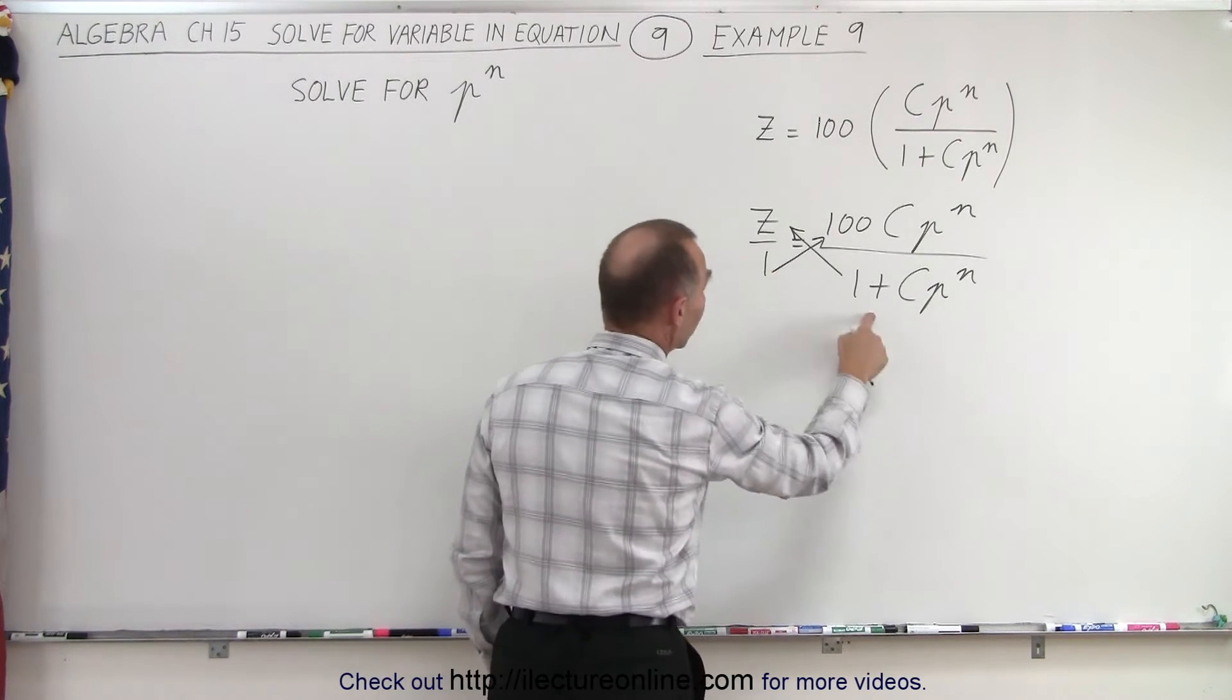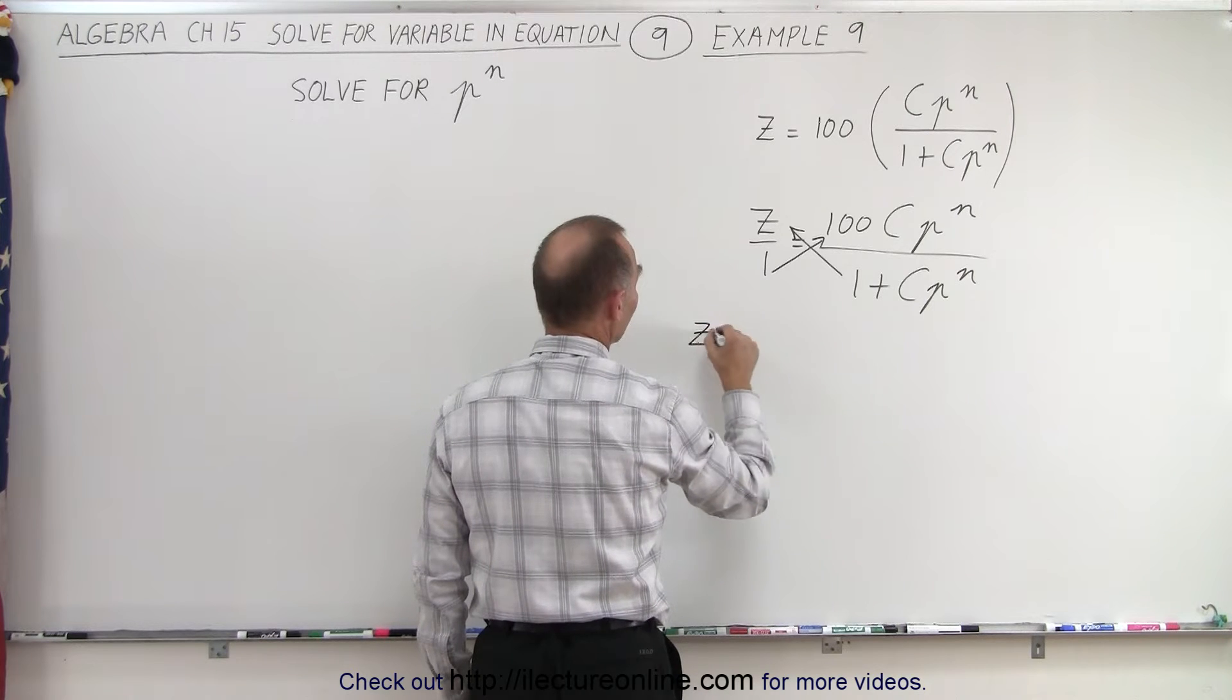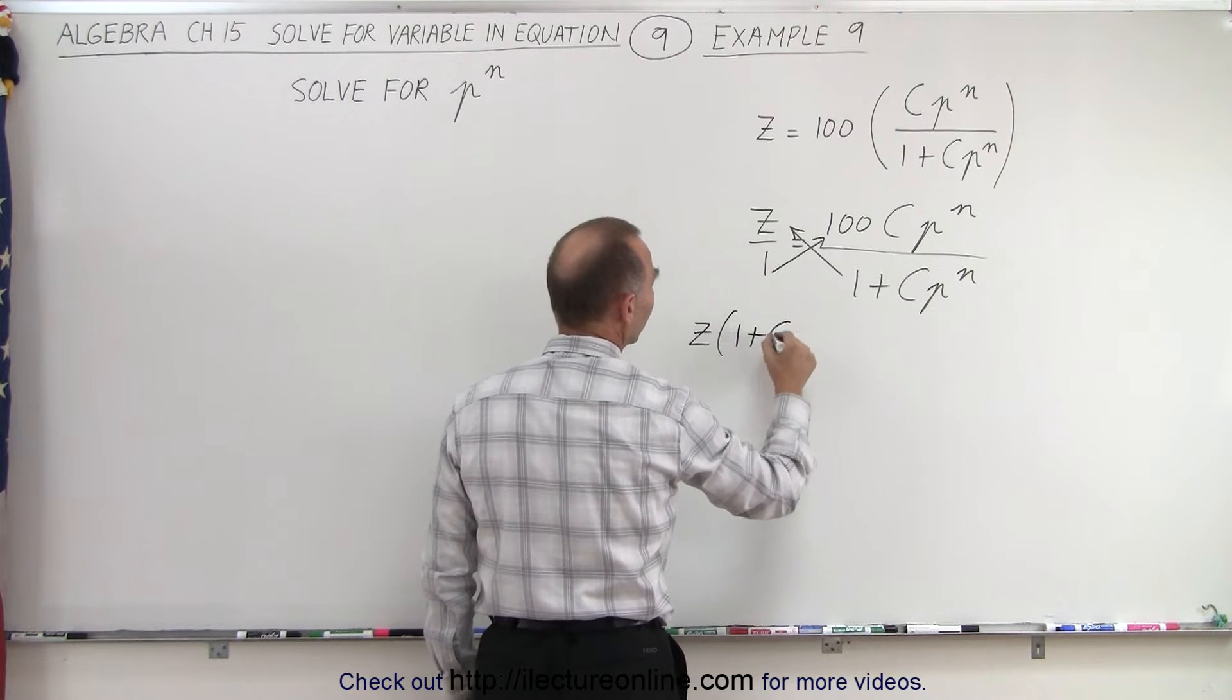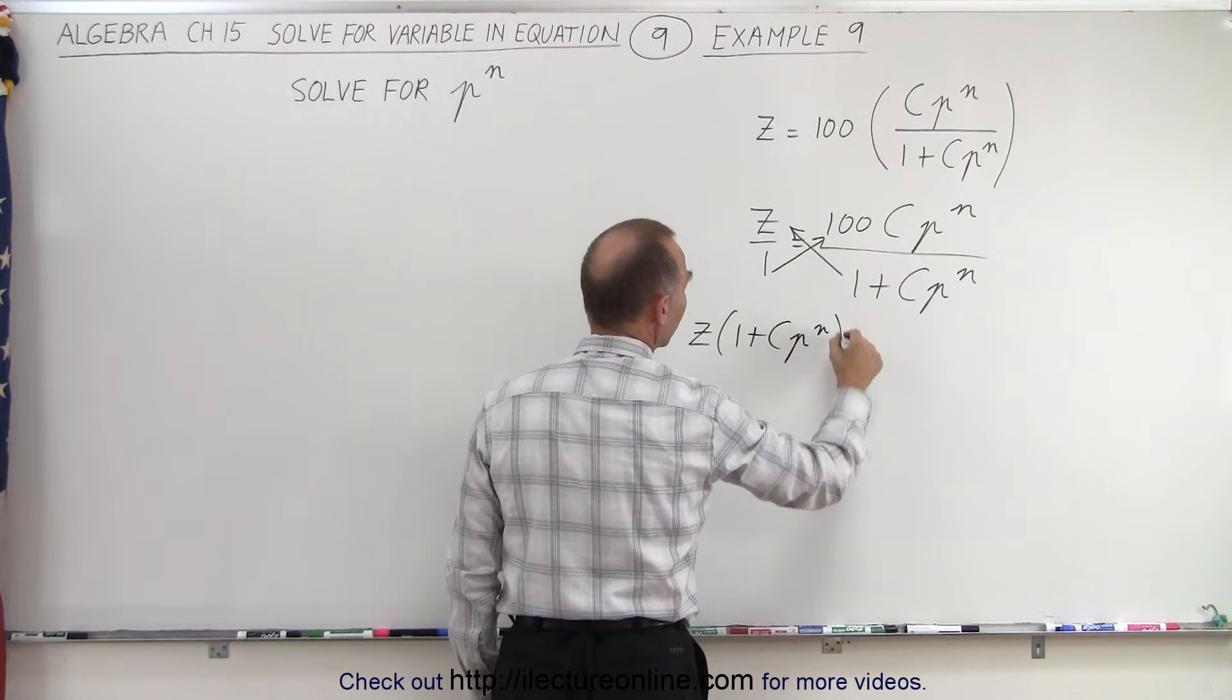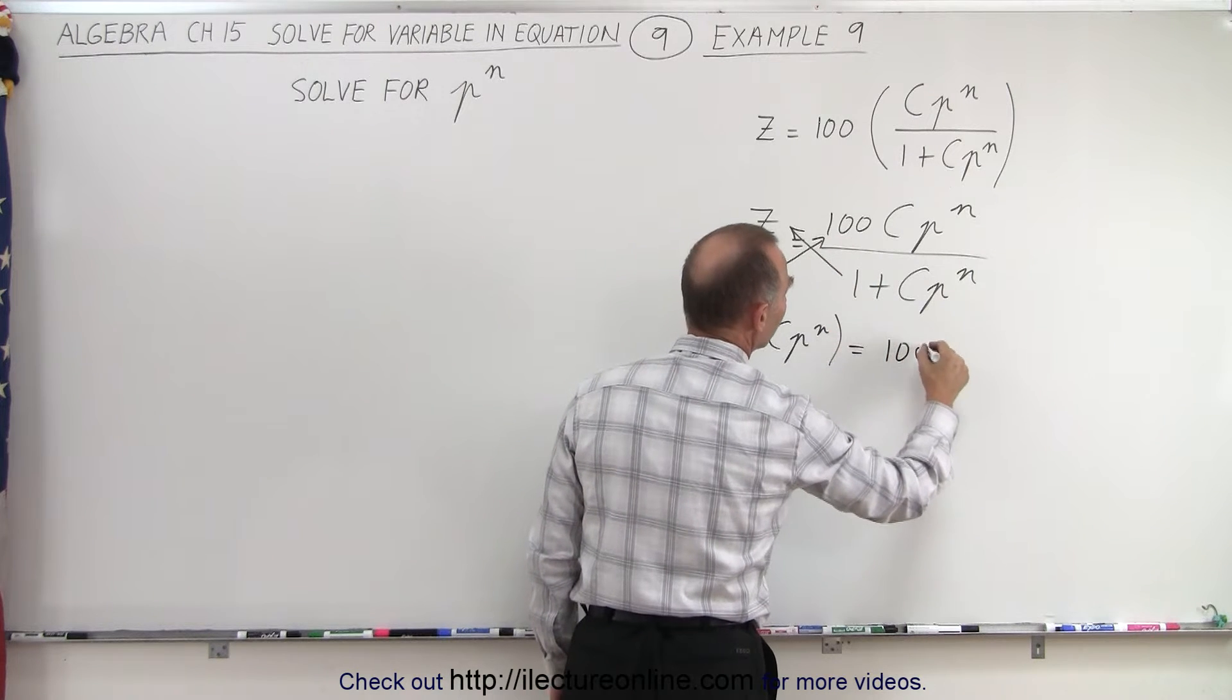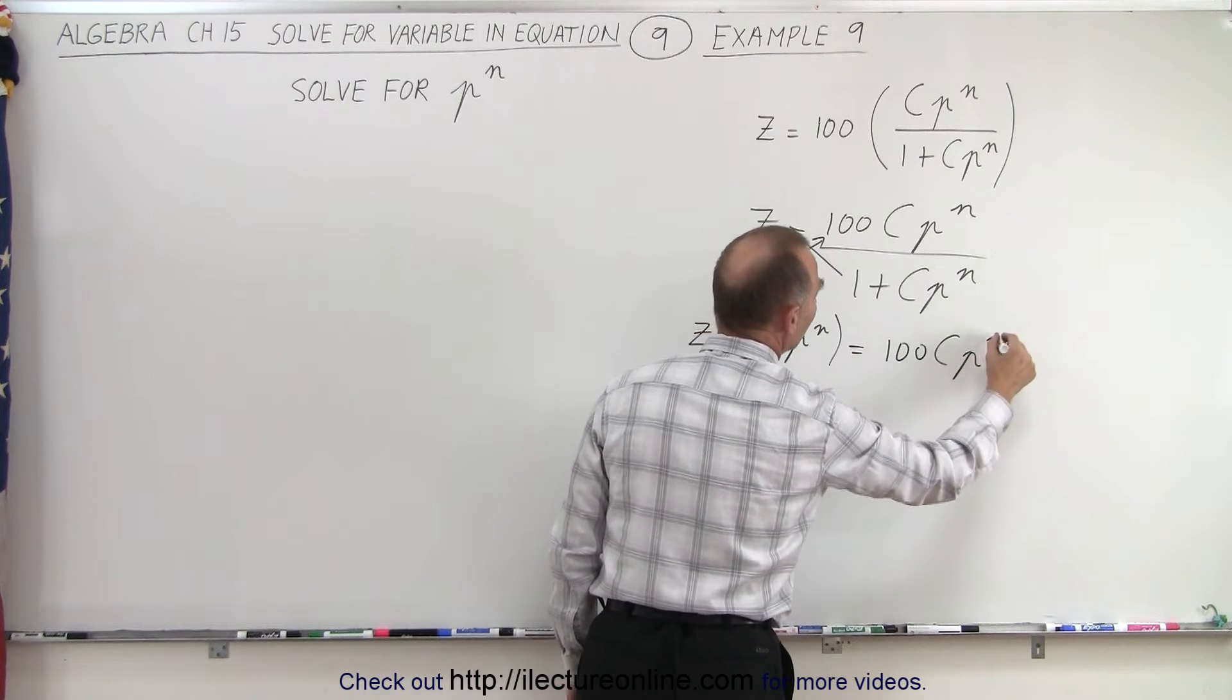In other words, when we multiply this through like this, on the left side we get z times 1 plus c times p to the n is equal to 1 times that which is 100 cp to the n.